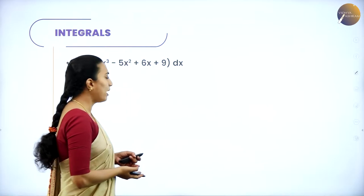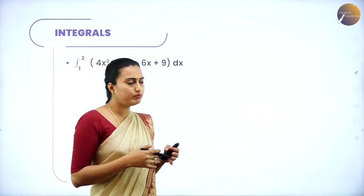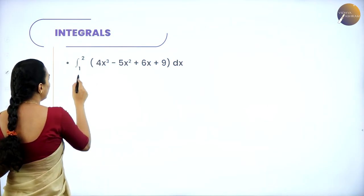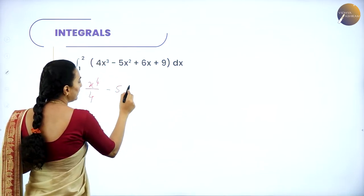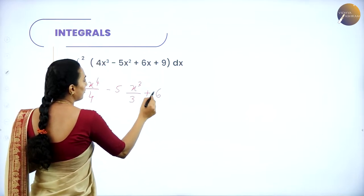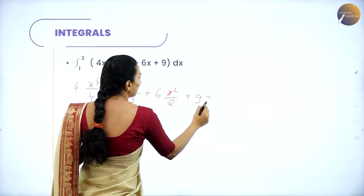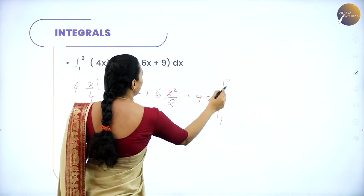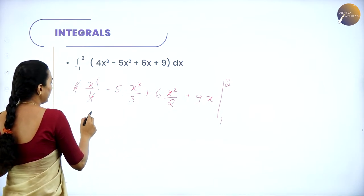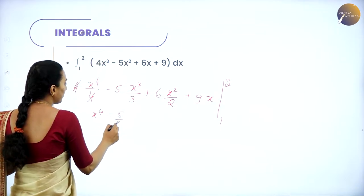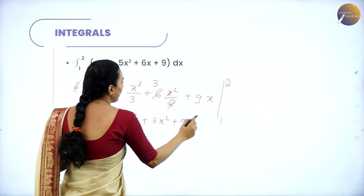The next problem is: integral from 1 to 2 of (4x³ - 5x² + 6x + 9)dx. Integrating directly: 4 × (x⁴/4) - 5 × (x³/3) + 6 × (x²/2) + 9x. Simplifying, the 4s cancel, giving x⁴ - (5/3)x³ + 3x² + 9x, evaluated from limit 1 to 2.